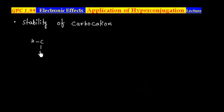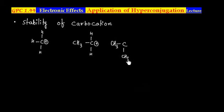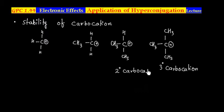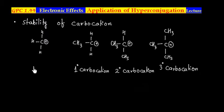Let us consider first the methyl carbocation. We can replace one hydrogen with CH3 to get a primary carbocation, replace two hydrogens with CH3 for a secondary carbocation, and replace three hydrogens with CH3 for a tertiary carbocation. The tertiary carbocation is attached to three carbons, the secondary to two carbons, and the primary to one carbon.